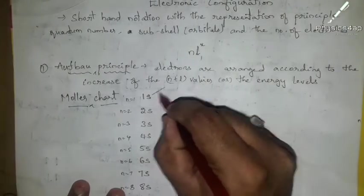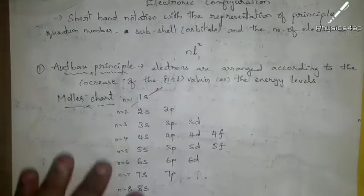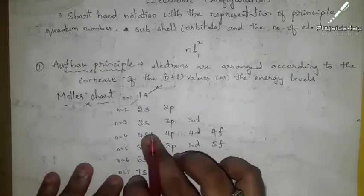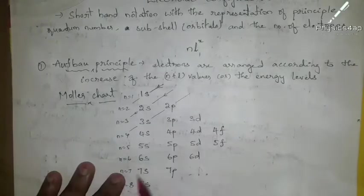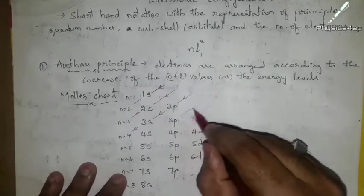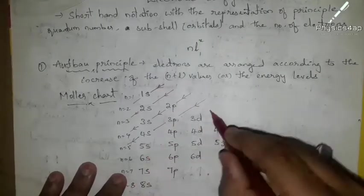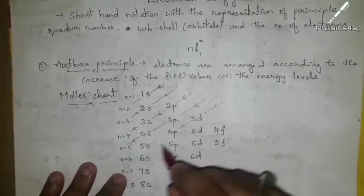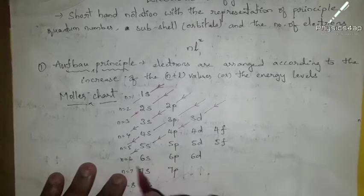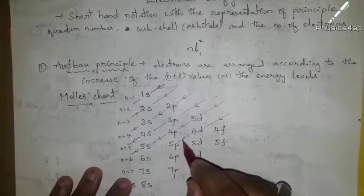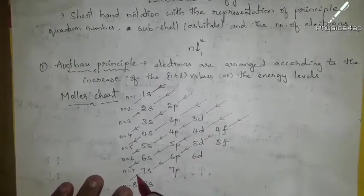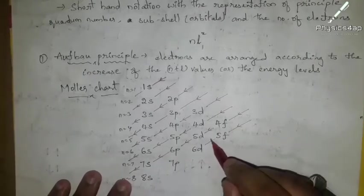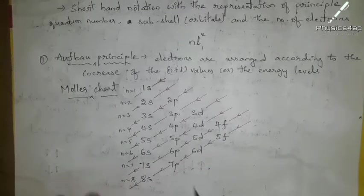The correct filling order from the Moeller chart is: 1s, 2s, 2p, 3s, 3p, 4s, 3d, 4p, 5s, 4d, 5p, 6s, 4f, 5d, 6p, 7s, 5f, 6d, 7p, and 8s. This is the increasing order of the energy levels, which we call the n plus l values.